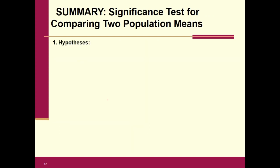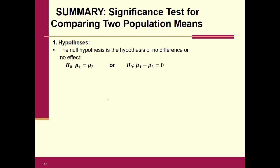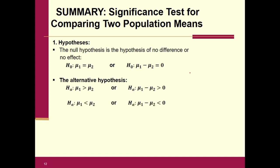For a hypothesis test, the null hypothesis is the hypothesis of no difference and no effect. It will always be either mu one equals mu two, or equivalently, mu one minus mu two equals zero. The alternative hypothesis requires a decision: mu one greater than mu two, mu one less than mu two, or mu one not equal to mu two. You can write it as a difference if you prefer.